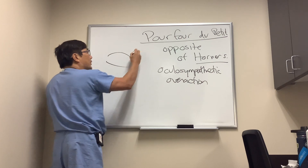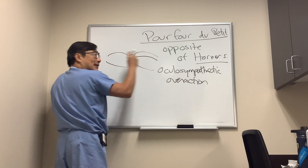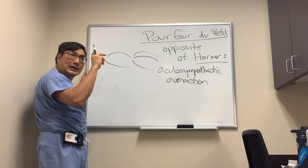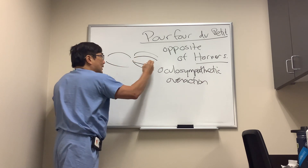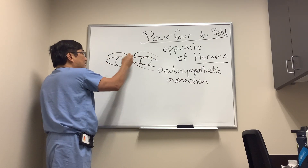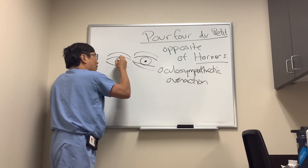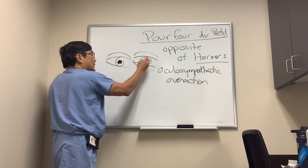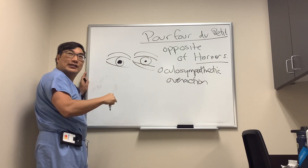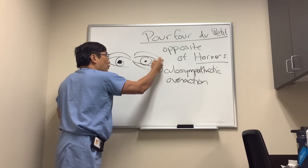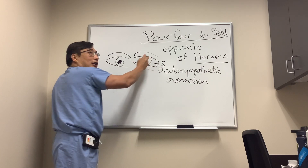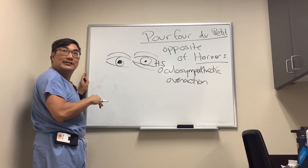In a Horner syndrome, we have a ptosis — a little bit of ptosis, because the Mueller muscle is only in charge of about one millimeter of ptosis — upside down ptosis, apparent enophthalmos, and a smaller pupil. An anisocoria that's greater in the dark, because the sympathetics aren't working on the Horner syndrome side.